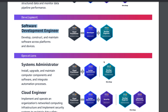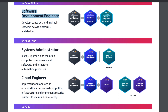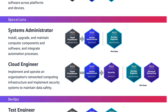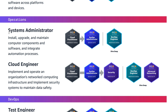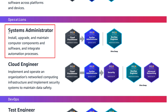When it comes to operations, there are multiple options — we have Systems Administrator and Cloud Engineer, both of which are really popular now. For Systems Administrator, the roles and responsibilities include installing, upgrading, and maintaining computer components and software, and integrating automation processes. The Systems Administrator path requires Cloud Practitioner foundational certification, then SysOps Administrator Associate, and optionally DevOps Engineer Professional for a deep dive.